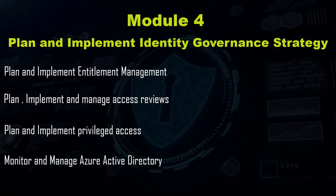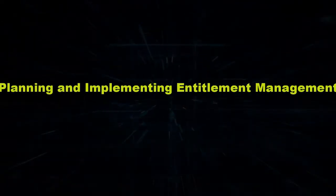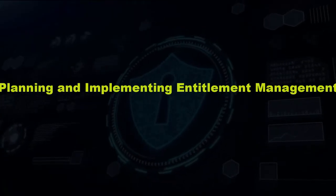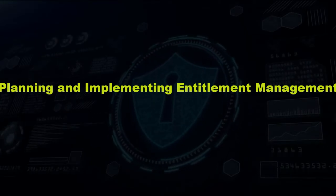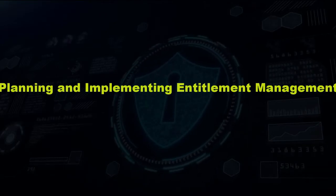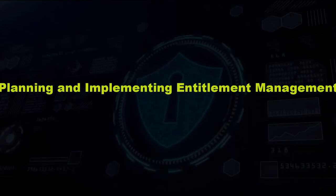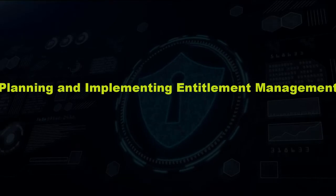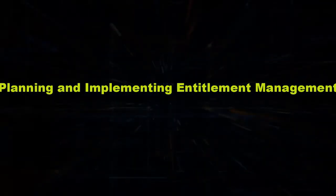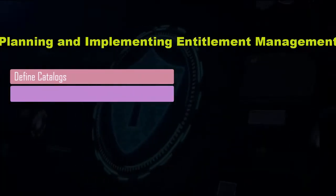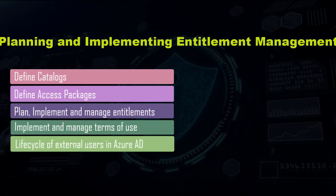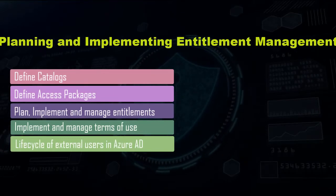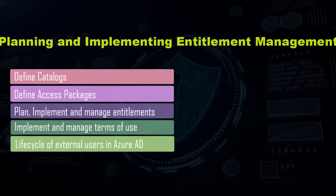The first chapter in Module 4 is about planning and implementing entitlement management. In organizations, new users join and external users — such as contractors — also join, and you assign resources and permissions to them. Over time, it's important to understand who has access to what resources and at what permission level. This chapter covers ensuring appropriate access is granted, creating reviews for that access, implementing terms of use, and managing the lifecycle of external users.